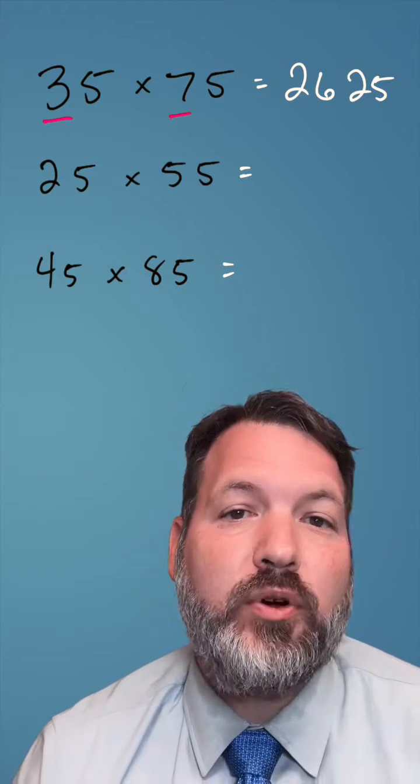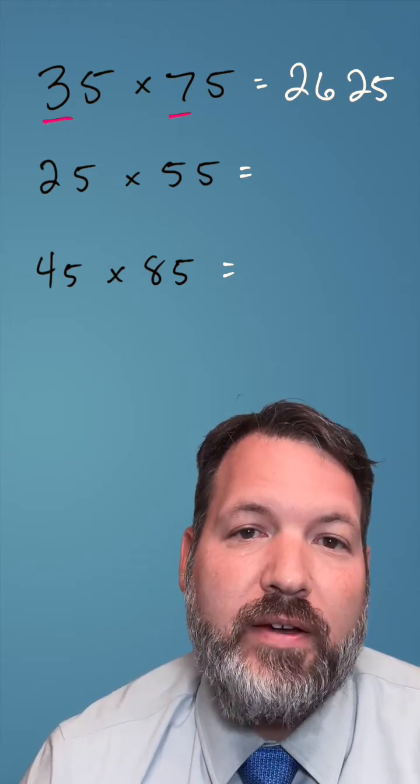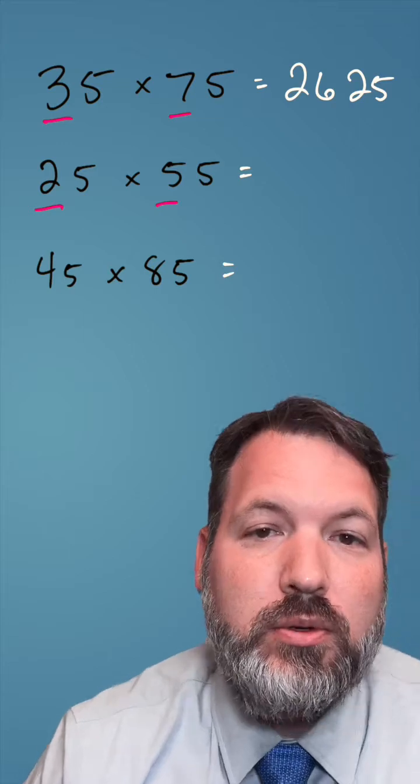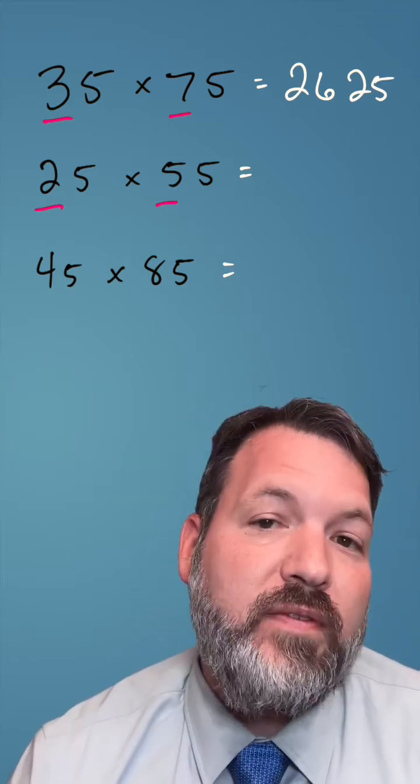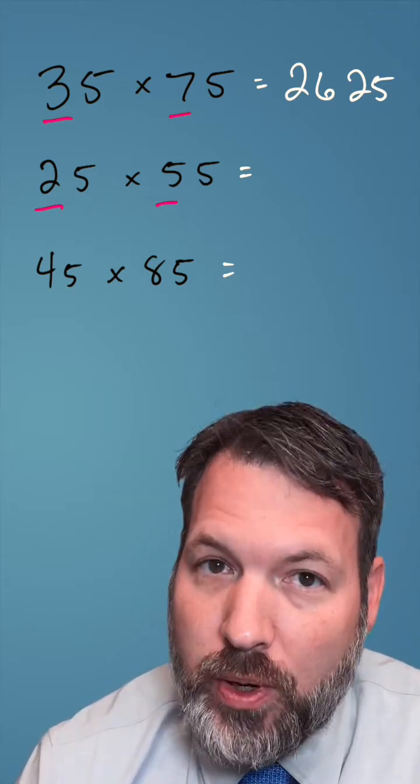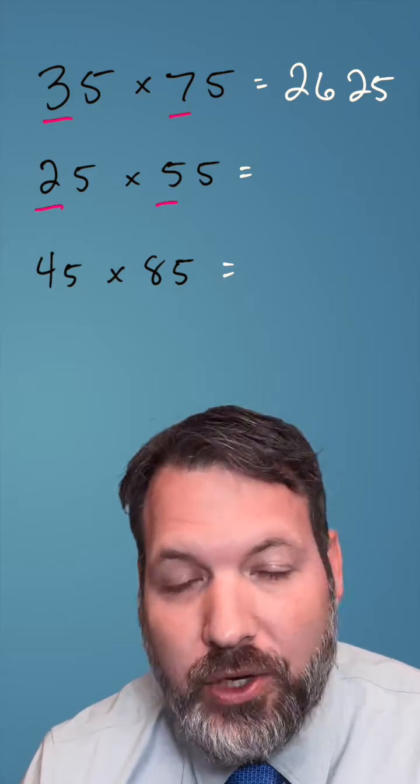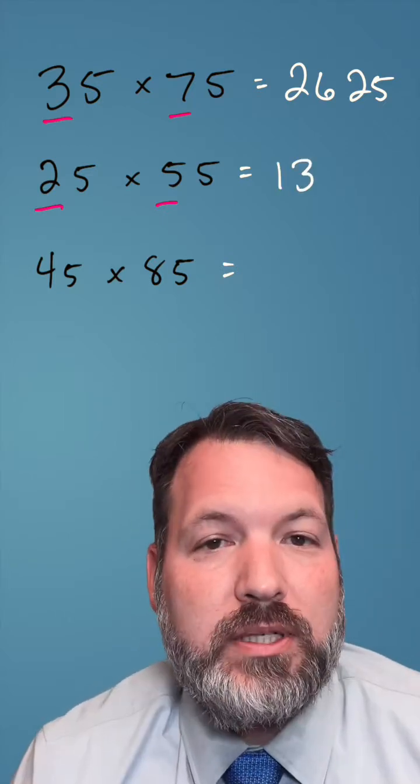Let's do one where you do have a remainder when you find the average, 25 times 55. We look at the tens digits first, two times five is 10. Two plus five is seven, half of seven is three, but it does have a remainder. Ignore the remainder for now, 10 plus the three makes 13.